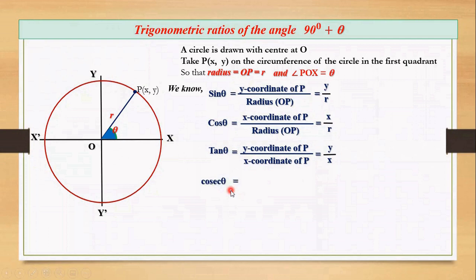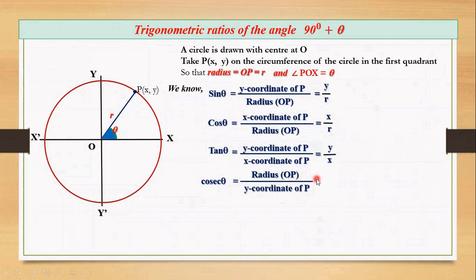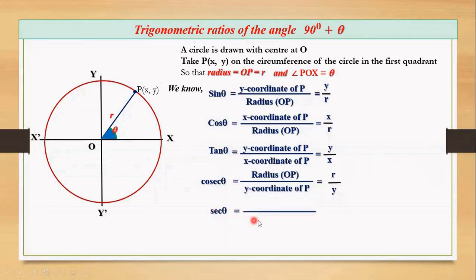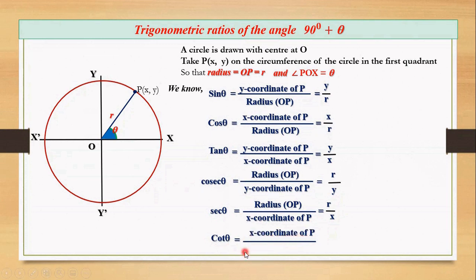Another ratio, cosec theta, is the ratio of the radius to the y coordinate of the point. It is the reciprocal of sine theta. Substituting r and y coordinate, we have r by y. Similarly, sec theta is the ratio of the radius to the x coordinate of the point, so we write r by x. And the last ratio, cot theta, is the ratio of x coordinate to the y coordinate, so we write x by y.